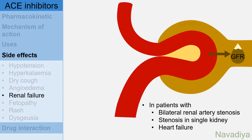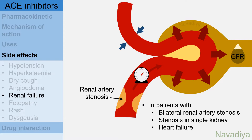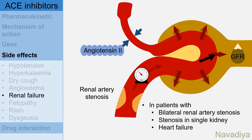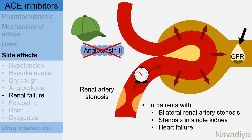Enough glomerular filtration rate has to be maintained for the kidney to do its normal work. One of the important determinants of GFR is glomerular capillary pressure, which in turn depends on incoming pressure from the afferent arteriole and resistance at the efferent arteriole. In normal individuals, both these parameters are right enough to maintain glomerular capillary pressure. However, in patients with renal artery stenosis or heart failure, there is reduced pressure at the afferent arteriole. Angiotensin comes to rescue and constricts the efferent arteriole, helping maintain glomerular capillary pressure. If you give ACE inhibitors to such patients, angiotensin II is gone, so there is no balancing at the efferent arteriole, glomerular capillary pressure falls, causing fall in GFR and thereby renal failure.